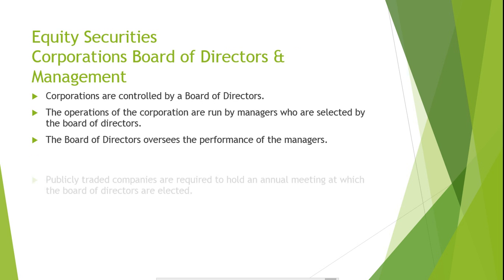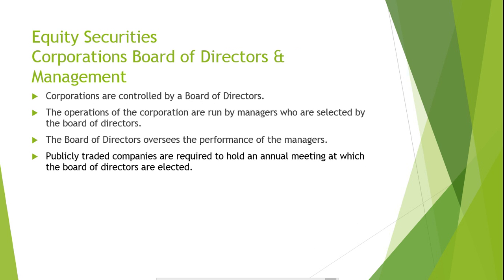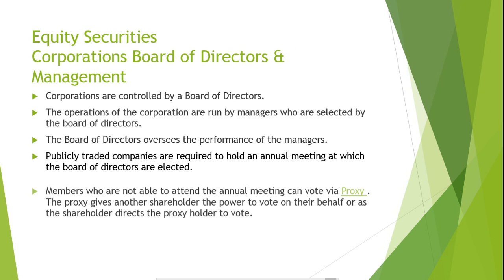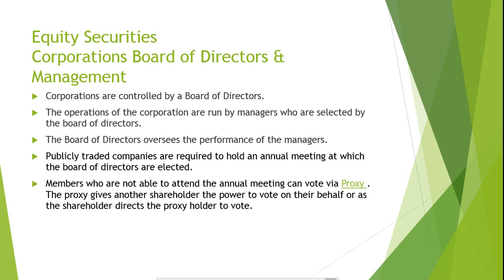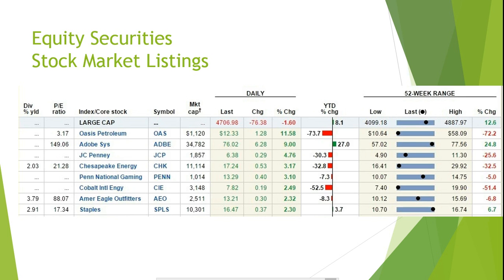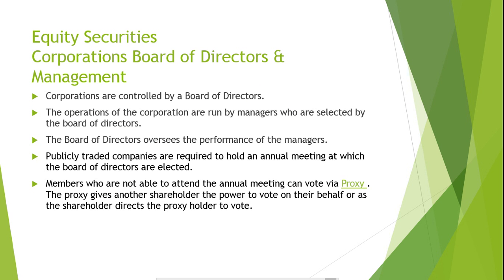Publicly traded companies are required to hold an annual meeting at which the board of directors are elected. Members who are not able to attend the annual meeting can vote via proxy. The proxy gives another shareholder the power to vote on their behalf, or as shareholders direct the proxy holder to vote. Usually, management solicits proxies from shareholders and generally gains the power to represent a majority of the shares, and thus management usually runs the firm in the way that they believe is best.